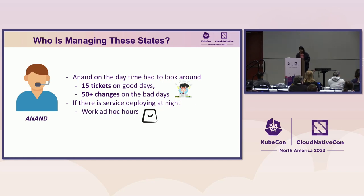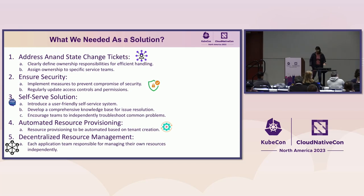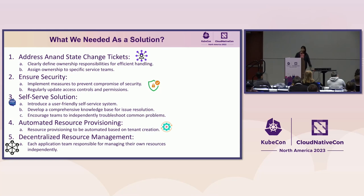Anand, apart from handling incidents and other issues, would manage 15 to 20 tickets on good days. On bad days he'd handle 50-plus tickets overnight for specific business application requirements. The state of the entire operations was not super good, and Anand was stressed out. We needed a solution that could help Anand, lessen his burden, ensure security was not compromised, move from centralized to decentralized, and ideally be automated.